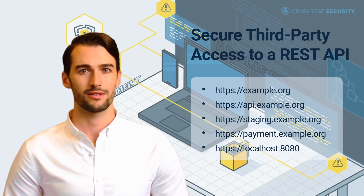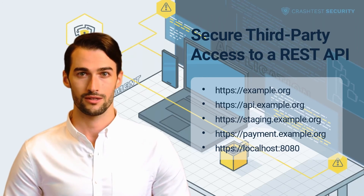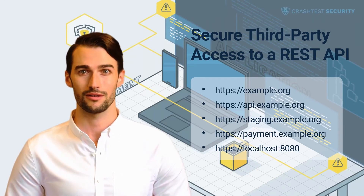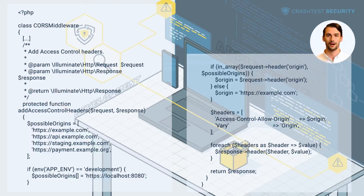If the application setup becomes more complex, things get much more complicated to configure. Assume there are more systems: https://staging.example.org holds the staging environment of the frontend; https://payment.example.org is the external payment provider that needs to access the API to confirm payments; and https://localhost:8080 is the local server the developer uses to try out changes locally. The Access-Control-Allow-Origin header cannot contain multiple domains separated by spaces or commas. Besides specifying a single domain, only the wildcard is another valid option, which would allow access from everywhere — and this is not a secure option in this case. Therefore, the API needs to check the request's origin and adjust the header field accordingly. It can use the origin header on the request to check who is accessing the resource. If it is one of the allowed domains, it sets Access-Control-Allow-Origin accordingly; otherwise, it just sets it to https://example.org so that the browser blocks the request.